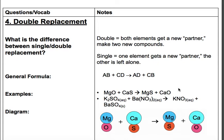Alright. So the next type of reaction we're talking about is double replacement. So the difference between single and double replacement is that double, both elements get a new partner. So you actually get two new compounds. With a single replacement reaction, only one element switches places and the other kind of stays alone.